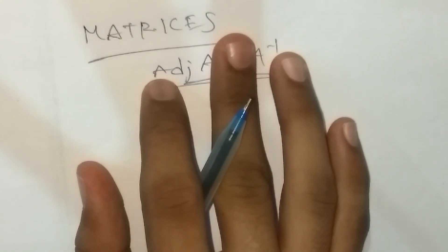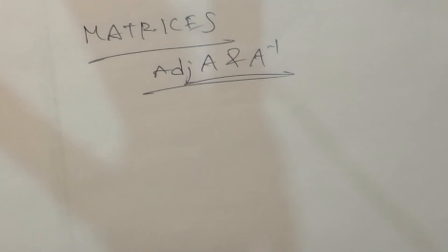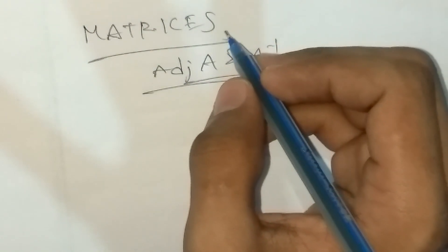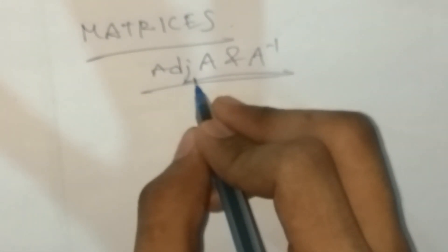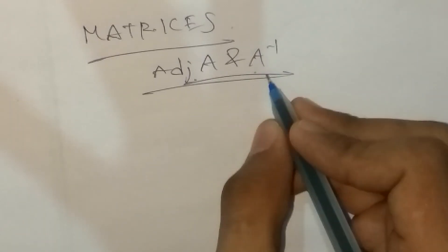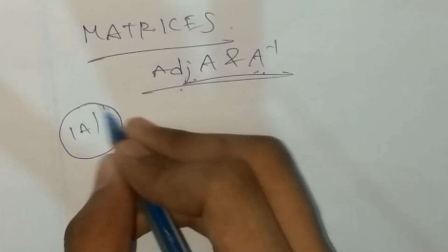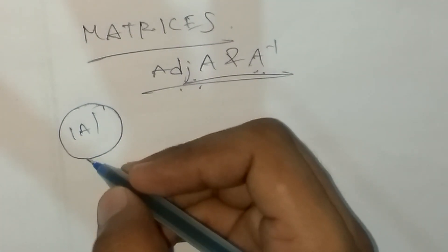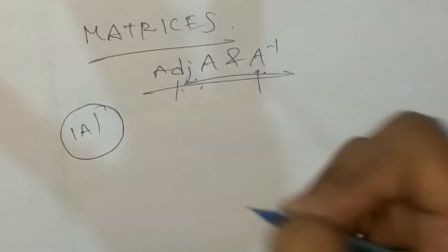Hello my dear students, welcome back to KMEC, my educational channel which is useful to all the intermediate students by MPC and BIPC also. Now we have two videos in this MC trick series. This is the matrices — in matrices we have the adjoint and the determinant, and what is the inverse? We have already made a video on adjoint; you can find it in the description of the video.